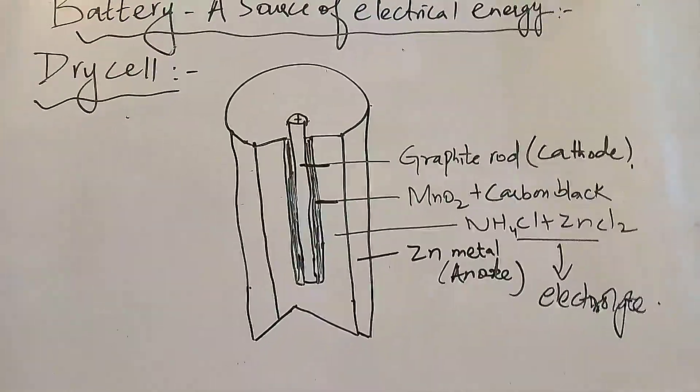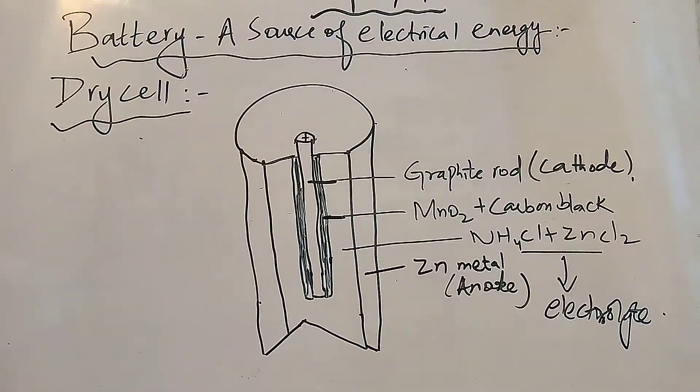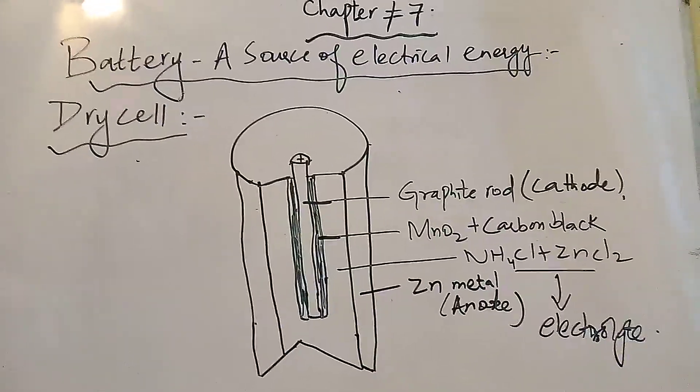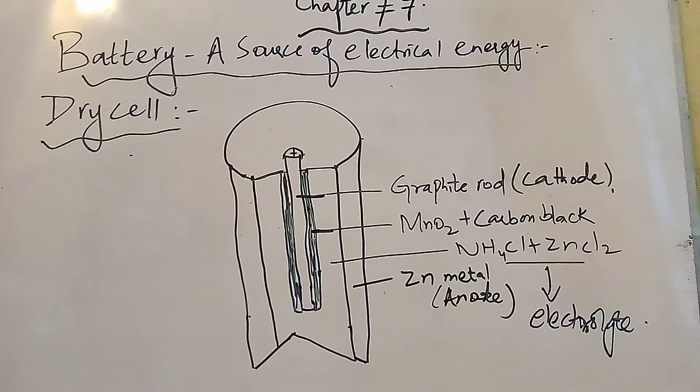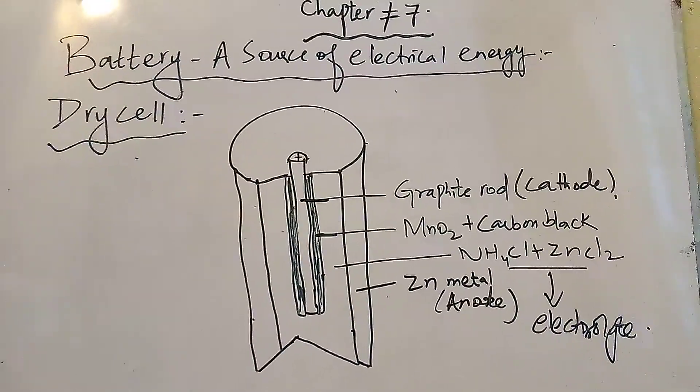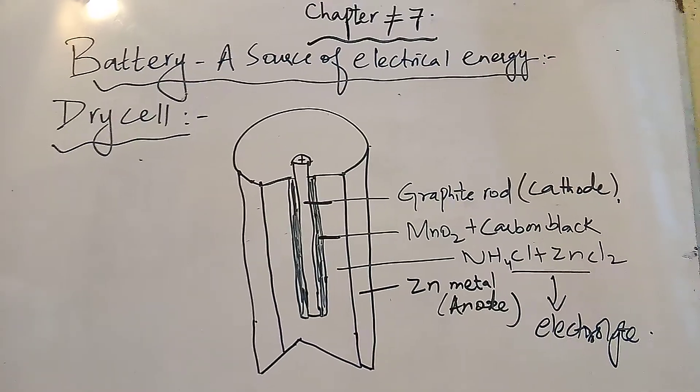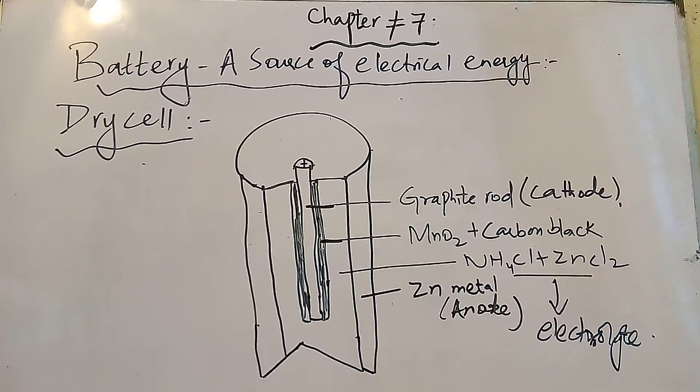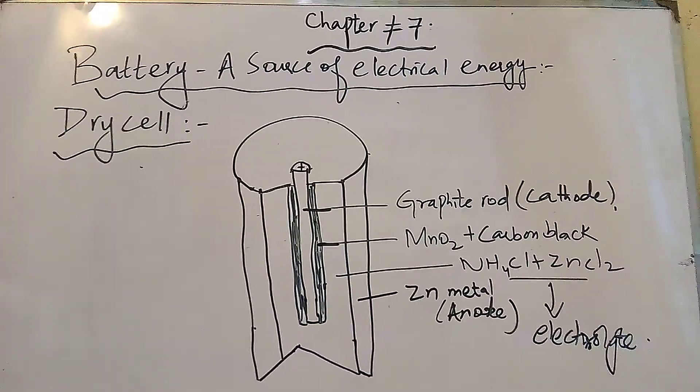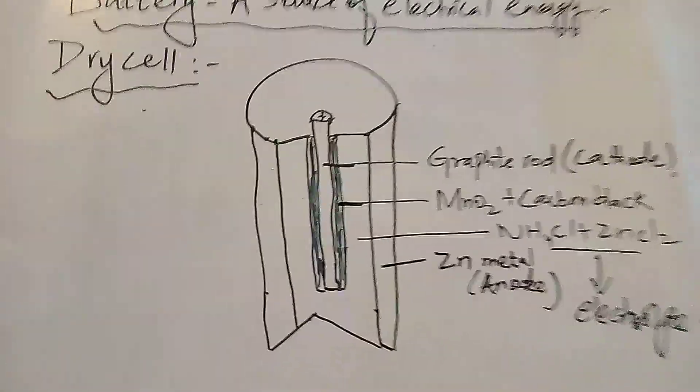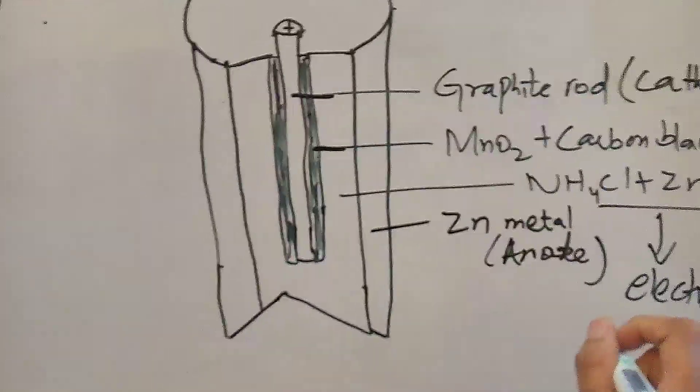Dry cell consists of anode and cathode. Anode is zinc metal of the container while cathode is the inner graphite rod at the center. Cathode is in contact with the mixture of manganese dioxide and carbon black paste which is also called charcoal. Electrolyte is ammonium chloride and zinc chloride.